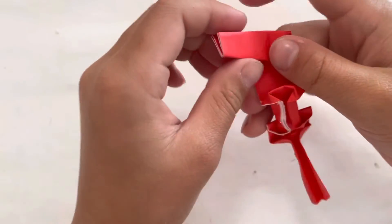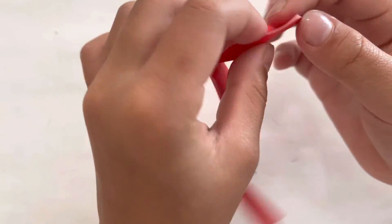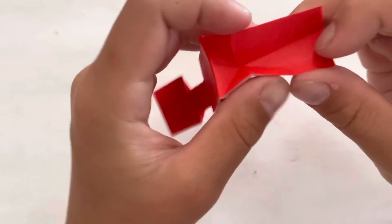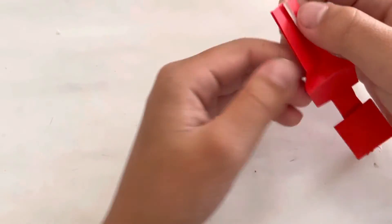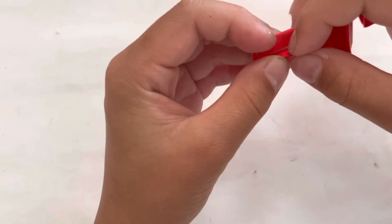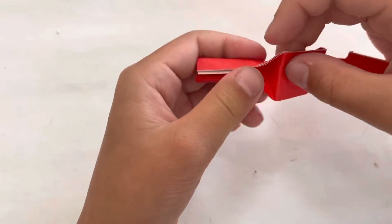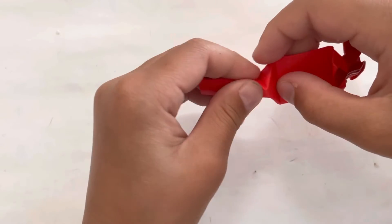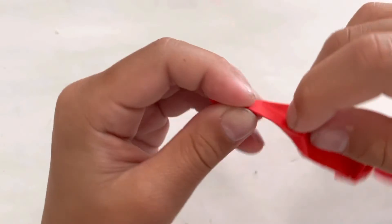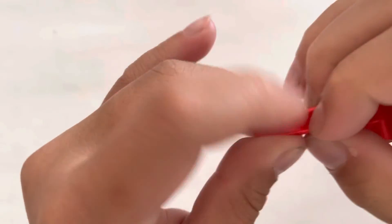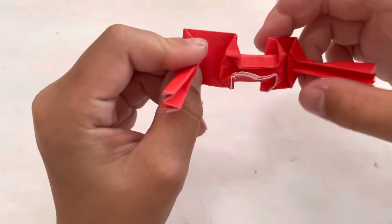And do the same thing. So open this up. Fold this edge to the middle. Do the same on this side. To the middle. Fold. And continue the fold. And open the sink. Like this. And close the sink. And fold it here.